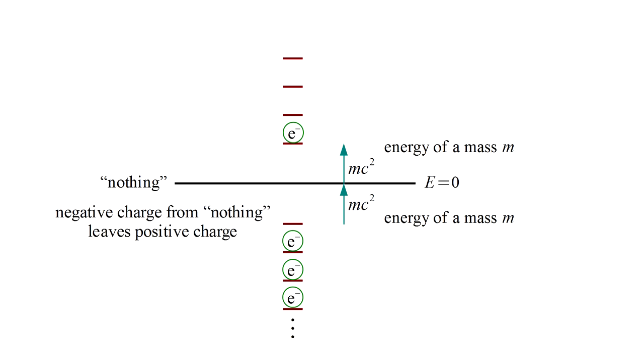Moreover, taking a negative charge away from nothing would leave a positive charge behind. Dirac called this empty negative energy state a hole and predicted it would behave like a particle with the electron's mass and opposite charge.